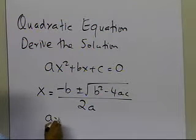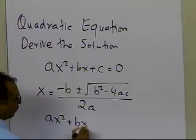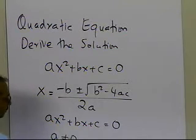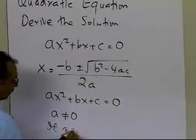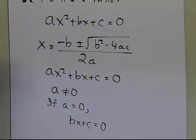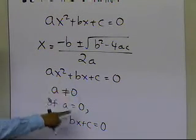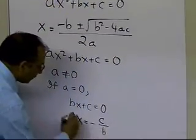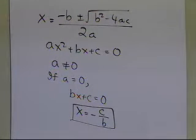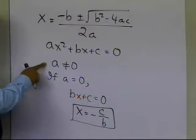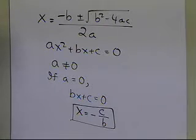Now, when you have ax squared plus bx plus c equal to 0 — that's the quadratic equation — we're going to assume that a is not equal to 0, because if a is equal to 0, then we know that we have bx plus c equal to 0. That's what the equation will turn out to be: a equals 0 makes the first term vanish, so you have bx plus c equal to 0, giving you x equal to minus c divided by b. So it is safe to assume we are solving a quadratic equation with a not equal to 0, because we know for a equal to 0 the solution exists and looks like that.